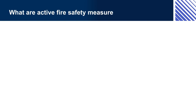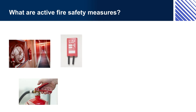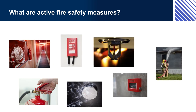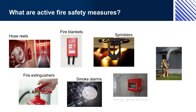What are the active fire safety measures? Active fire safety measures are those triggered when exposed to the products of fire — such as heat, smoke, or toxic gas — such as an automatic smoke alarm, or which are manually or automatically operated, for example a fire extinguisher on a wall which must be manually operated. A smoke alarm triggers when it senses the presence of smoke. Examples of active fire safety measures include hose reels, fire extinguishers, fire blankets, smoke alarms, sprinklers, break glass alarms, emergency lighting, firefighters, and emergency services.